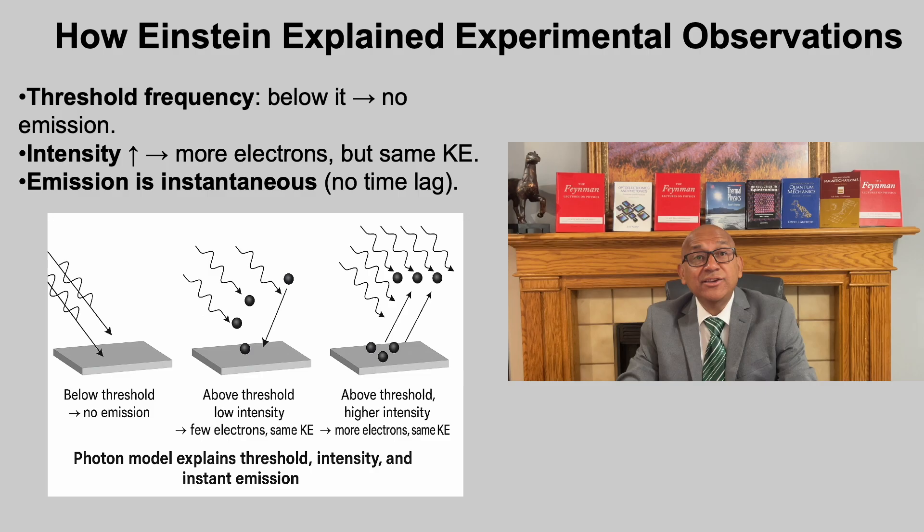Second, increasing intensity at a frequency above threshold does not change the maximum energy of the electron. It only increases the number of photons, and therefore the number of electrons ejected. Third, emission is instantaneous. Electrons appear the moment light of sufficient frequency shines, with no measurable delay. This is only possible if energy transfer happens in discrete photon-electron collisions.